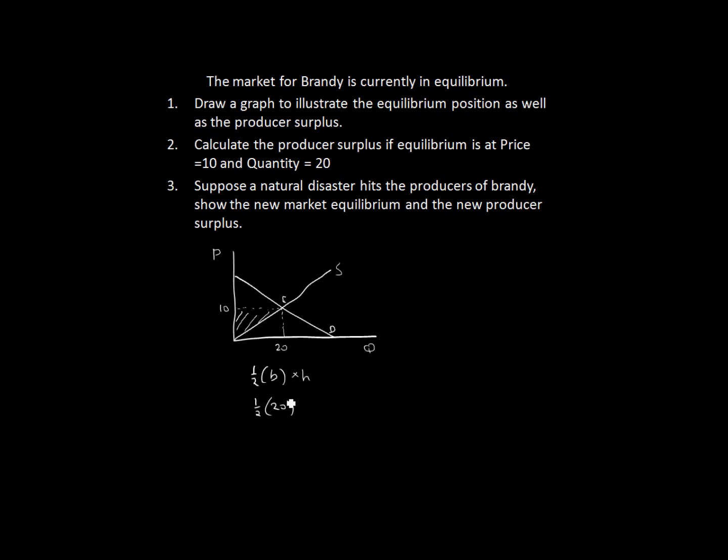So we can put it in, and times our height of our triangle, which in this case is this part there, which is 10. So it's simply going to be 10 times 10, which gives us 100. So the value of our producer surplus is 100.